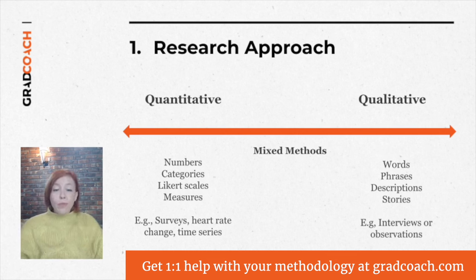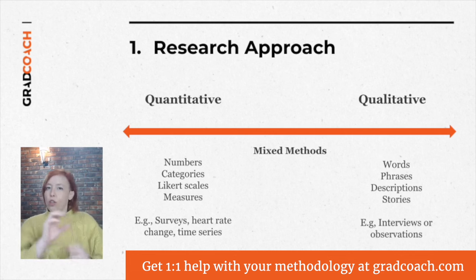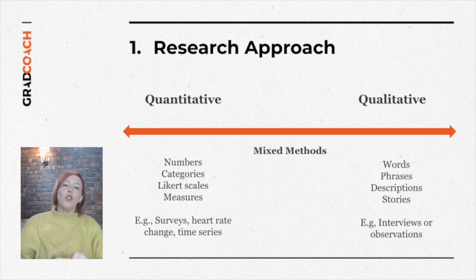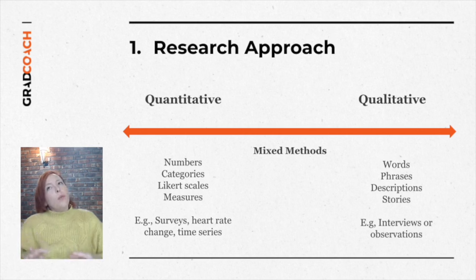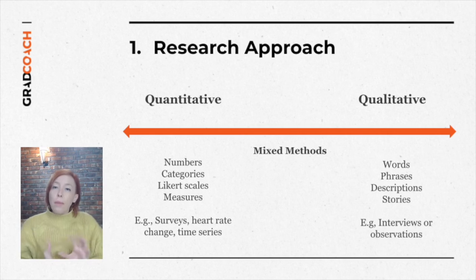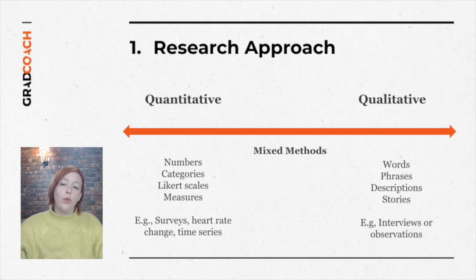In quantitative research, you might consider surveys with closed questions to get percentages of how people responded, while qualitative tends to involve interviews to unpack ideas in more depth. The first main question to really hinge your methodology on is: does it make sense to use numbers for your research question, or do you want to sit and unpack a series of ideas and descriptions? Ask yourself whether your aim is around measurements and correlations, or around describing and exploring something.